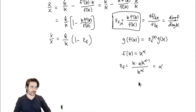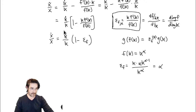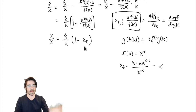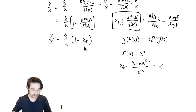In the Cobb-Douglas case, the elasticity is just alpha, so the growth rate of X equals the growth rate of K times (1 - alpha). That's exactly what we see in the derivation in the slides. This is just a slight generalization of that.